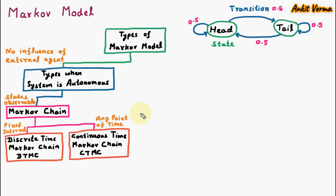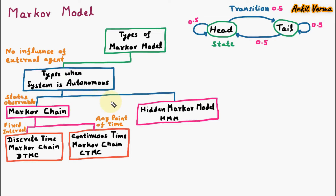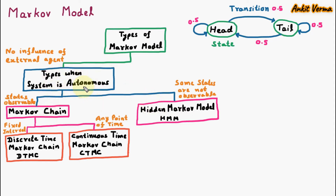The second type of Markov Model is Hidden Markov Model, also called HMM. Hidden Markov Model is used when some states are not observable — not observable means they are not directly visible. Suppose we are on one state and the other states are not observable or not properly visible, then we use Hidden Markov Model. So these are the two types of Markov Model when the system is autonomous.